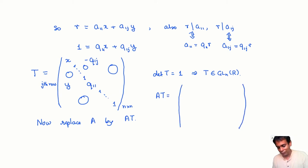So to get the one-one entry of AT, I have to take the first column of T and I have to multiply it by the first row of A. And what I will get is a_11 times x plus a_1j times y. So I will get r over here, and I do not really care what I get anywhere else.